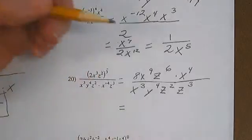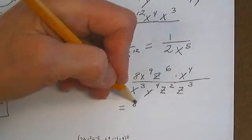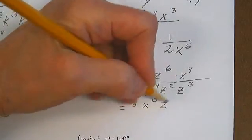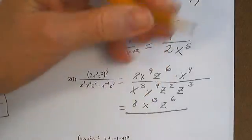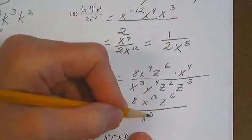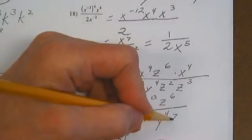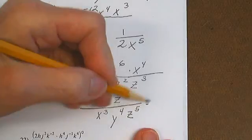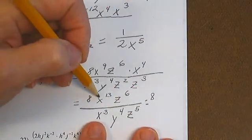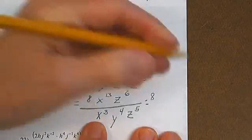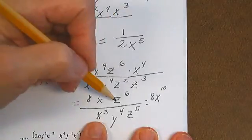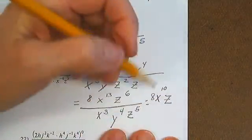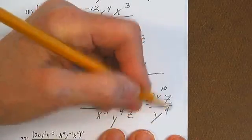So what do we have? We have 8, x to the 13th — because 9 plus 4 is 13 — times z to the 6th, over x cubed, y to the 4th, z to the 5th. Let's simplify: we still have 8 in the numerator. X to the 13th divided by x cubed is x to the 10th. Z to the 6th over z to the 5th gives me z in the numerator. Over y to the 4th.